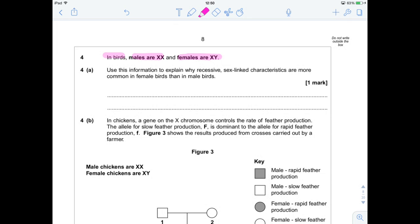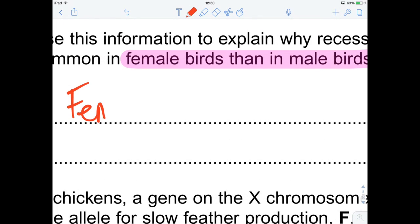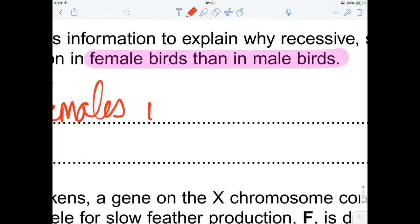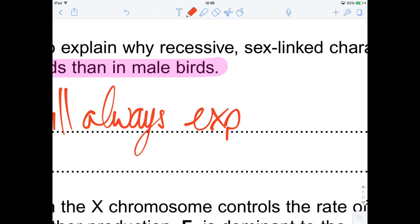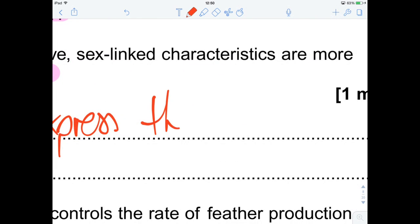Question 4A says use this information to explain why recessive sex-linked characteristics are more common in female birds than in male birds. Basically it's a case of saying, well if it's on the X chromosome, then if you're a female, the allele will always be expressed. Whereas males, they need to be homozygous recessive to express the characteristic. So the most succinct way that you can say this is that females always express the recessive allele.